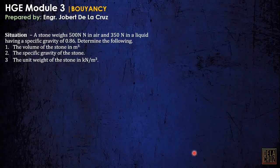Another example: a stone weighs 500 newtons in air and 350 newtons in a liquid having specific gravity of 0.86. Determine the following: the volume of the stone in cubic meters, the specific gravity of the stone, and the unit weight of the stone in kilonewtons per cubic meter.